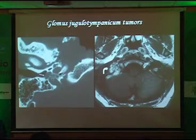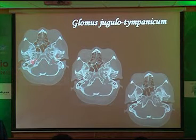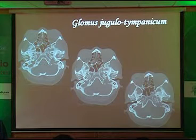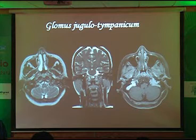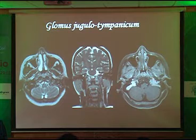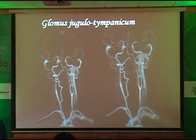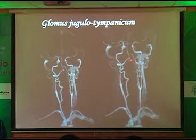For glomus jugulotympanicum: you can see erosion of the jugular fossa — the right jugular fossa is normal while the left is eroded. CT is very important to look at bone erosions. On MR, you can look at the tumor within the jugular fossa. You can do a dynamic study, acquiring the whole volume in less than five or six seconds, with no radiation, and plot a curve.